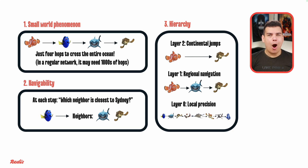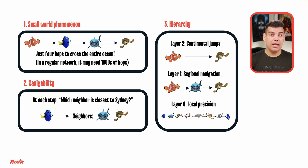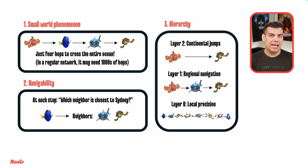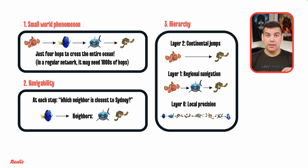Now let's discuss how data is organized. With HNSW, layer assignment is probabilistic. New fish are assigned a maximum layer using an exponential distribution — most stay in lower layers, and some become highway connectors. This creates a self-organized structure that maintains itself as the ocean — meaning your dataset — grows.